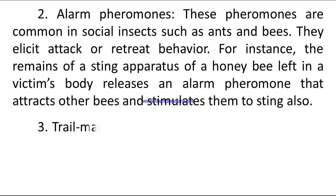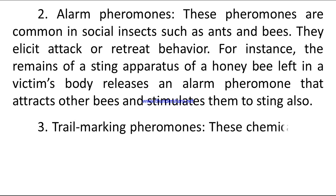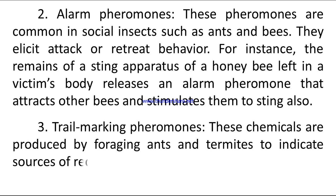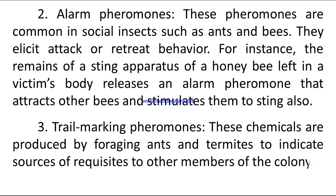Number three: trail marking pheromones. These chemicals are produced by foraging ants and termites to indicate sources of food and other requisites to other members of the colony.